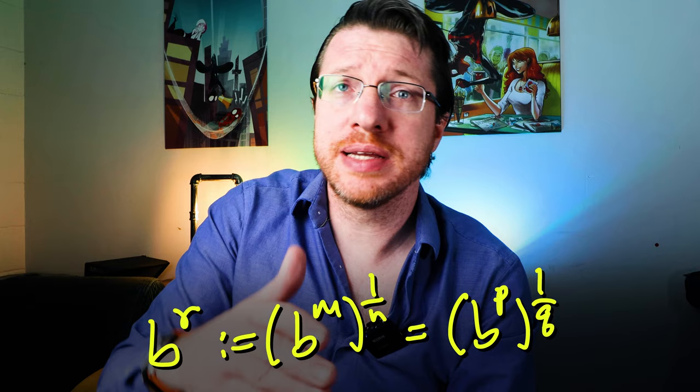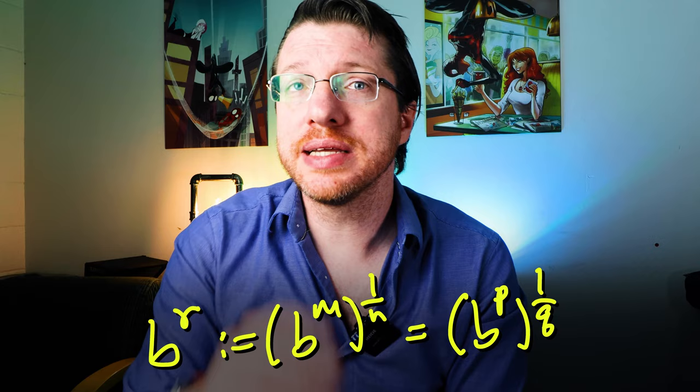We now know that it makes sense to write not B raised to the 1 over N raised to M, but B raised to M over N, and we can change that M over N to P over Q without changing the final number.